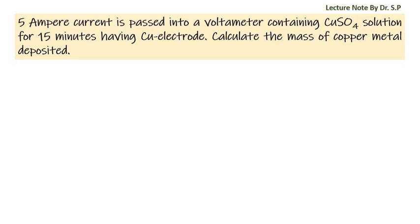We have a question: 5 ampere current is passed into a voltmeter containing copper sulfate solution for 15 minutes having copper electrode. Calculate the mass of copper metal deposited.